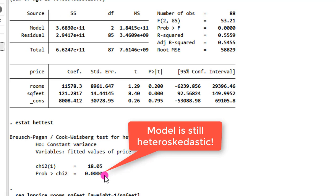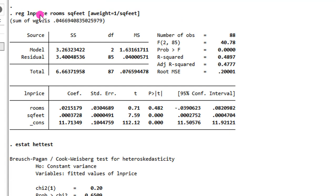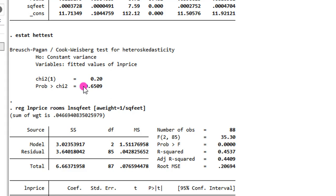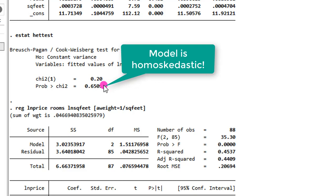Let's look at the second analysis. Now I have a log level model with a log of price and the levels of the independent variables. Our interest is on the outcome of the Breusch-Pagan test. And we can see here the p-value is 0.6509, clearly telling us that the problem of heteroskedasticity has been removed using the weighted least squares approach and the log level functional form of the model.